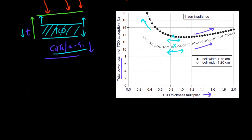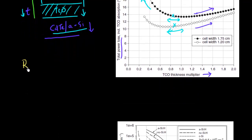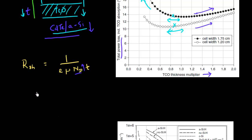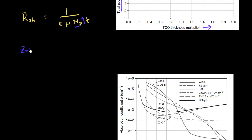If I can't do much with the thickness of my TCO material, how do I decrease sheet resistance? Looking at the formula, sheet resistance is inversely proportional to mobility, inversely proportional to doping density, and inversely proportional to thickness. We have limited play with thickness. One thing I can do is increase my doping density, which is in fact very readily employed in TCO films. For example, aluminum is added to zinc oxide to act as a dopant, and tin is added to indium oxide films to increase doping density.